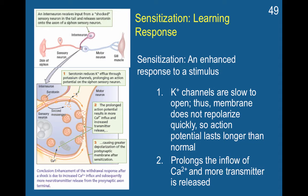Habituation is partly responsible for habituating to a drug, for example. Sensitization is basically the opposite — an enhanced response. Both habituation and sensitization involve calcium. Habituation results in decreased calcium entering the cell, which affects neurotransmitter release. Sensitization, on the other hand, results in more calcium entering the cell. If more calcium enters the cell, then more neurotransmitter is released, which will have a greater effect on the postsynaptic membrane.